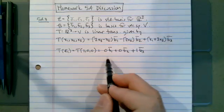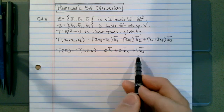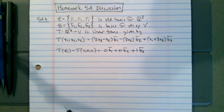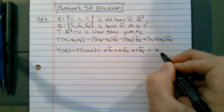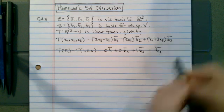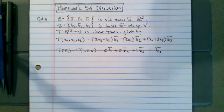So we have 0·B1 plus 0·B2 plus 1·B3, which simplifies to just B3. That's the image of E1 under T.